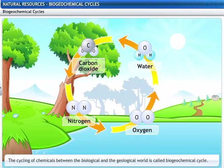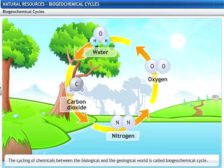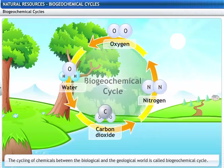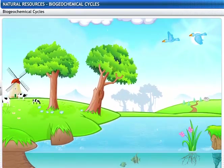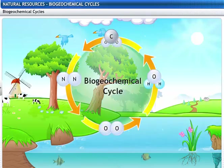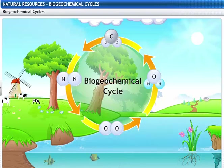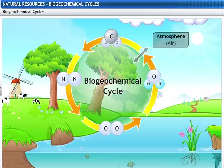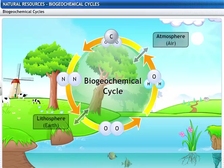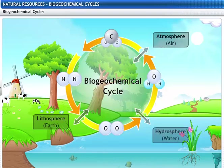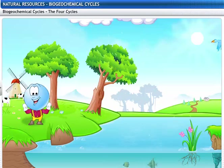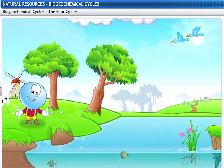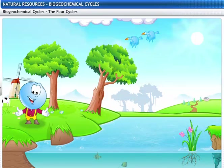The cycling of chemicals between the biological and the geological world is called a biogeochemical cycle. The biotic and abiotic components of the biosphere constantly interact through these cycles. During these interactions, there is a transfer of nutrients between living organisms (bio) and the non-living environment (geo). I'm Oxy, and I shall join you on this journey to explore the different biogeochemical cycles.